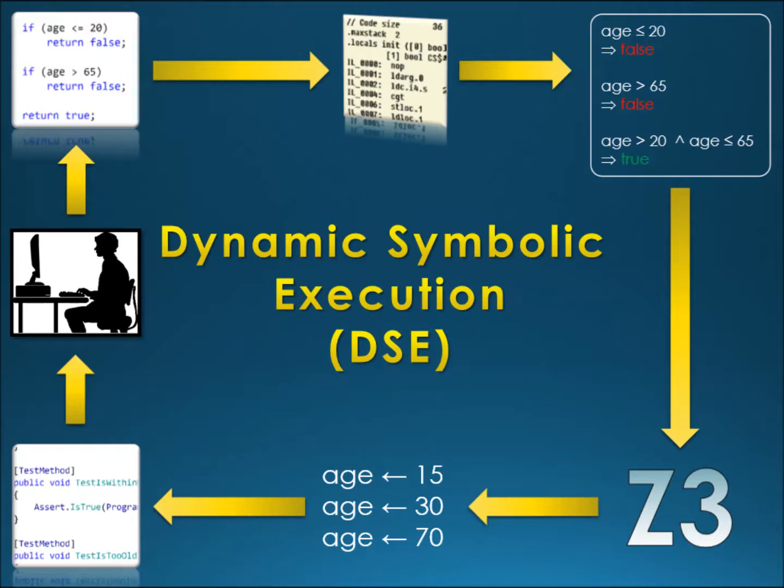So, let's repeat. The developer first writes the code, which gets compiled to bytecode. The DSE engine extracts the mathematical constraints. The constraints then get solved and the solutions are used as arguments for the method under test in the resulting automatically generated unit test suite.